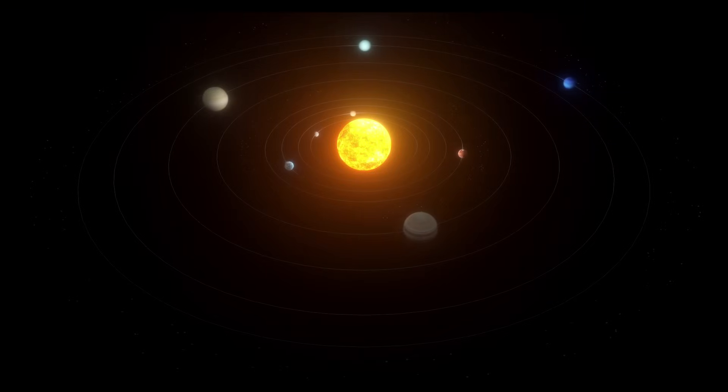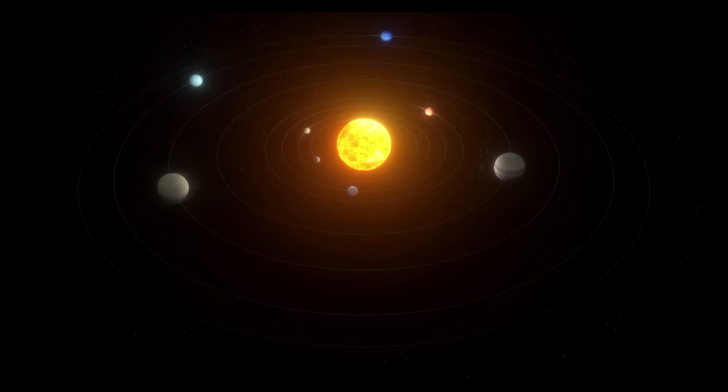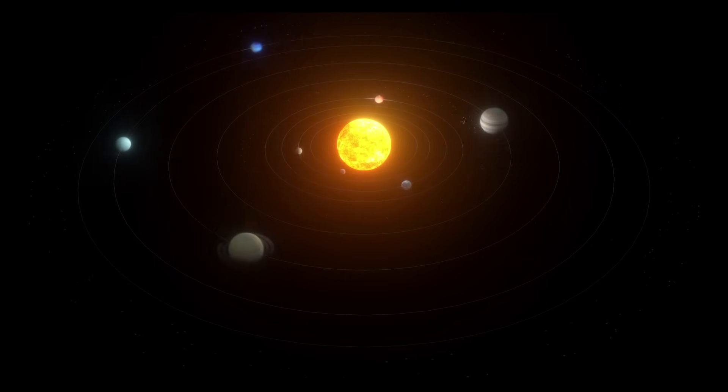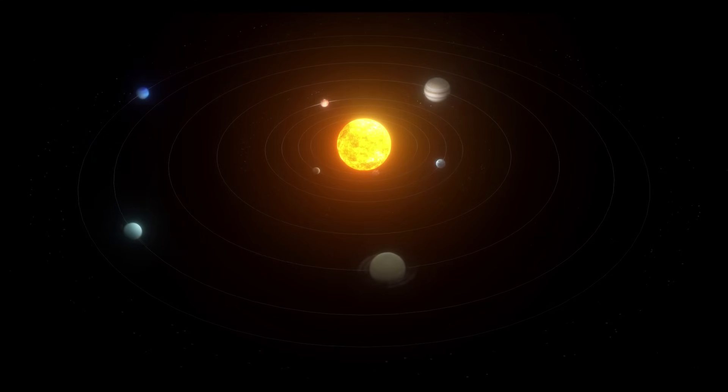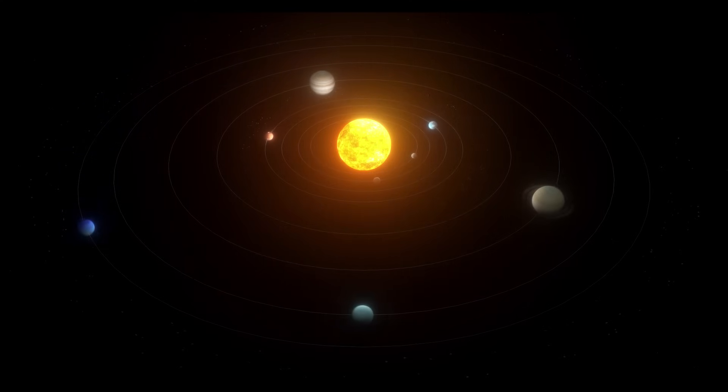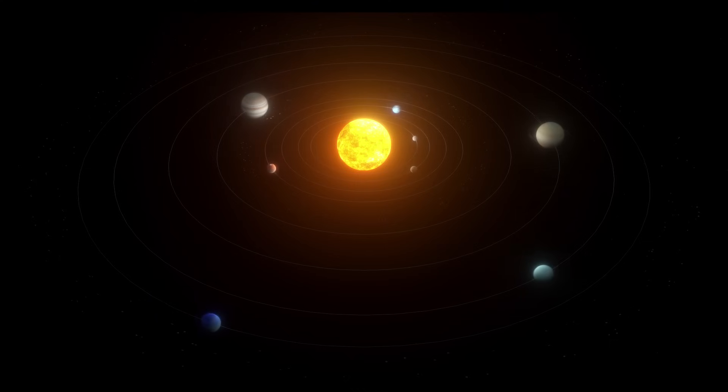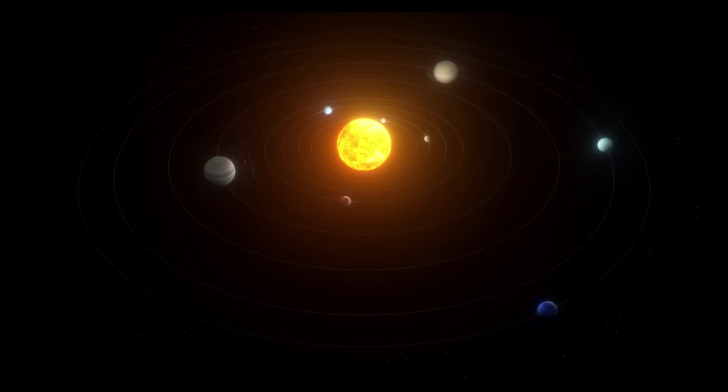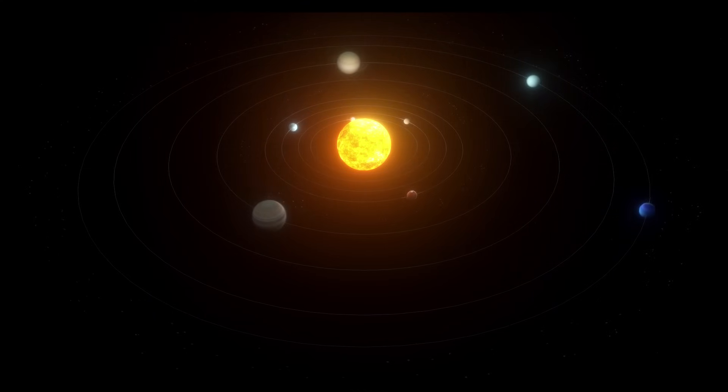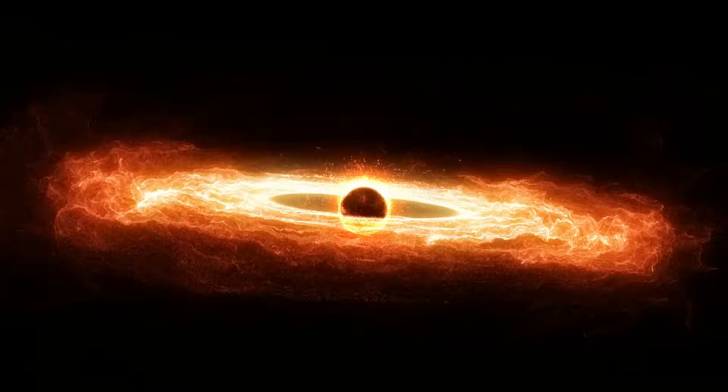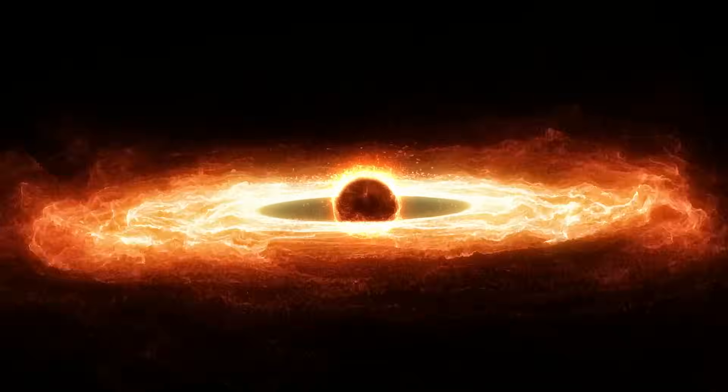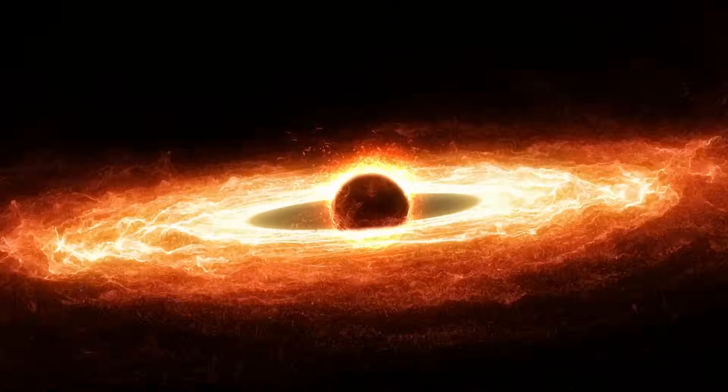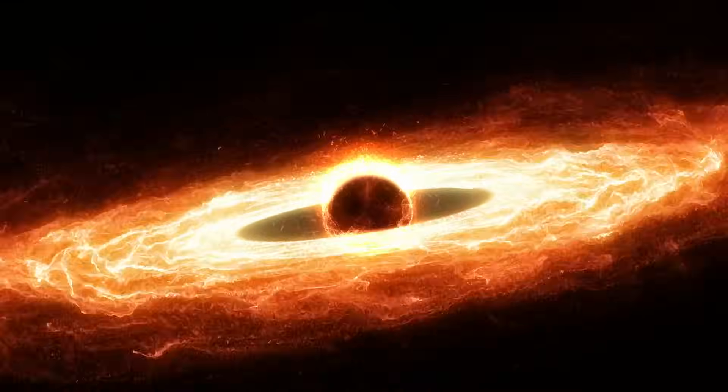For decades, we've been fed the same simplistic model of our solar system: eight neat planets circling the sun on what looks like a cosmic vinyl record. But this tidy illustration isn't just misleading, it's a fundamental distortion that obscures the true nature of our cosmic neighborhood. Be sure to keep watching until the end because I'm going to reveal shocking evidence about massive structures looming thousands of times larger than our entire planetary system that conventional astronomy textbooks conveniently ignore.